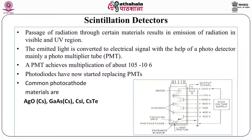From gas-filled detectors, let's come to scintillation detection. Scintillation refers to the emission of light in the visible or UV region when radiation passes through certain materials. This emitted light can be converted into an electrical signal with the help of photo detectors. Light photons fall on a certain material which emits electrons via the photoelectric effect, producing an electrical signal. Light emitted by ionizing radiation is incident upon a photo detector, measured, and correlated with the amount of radiation.